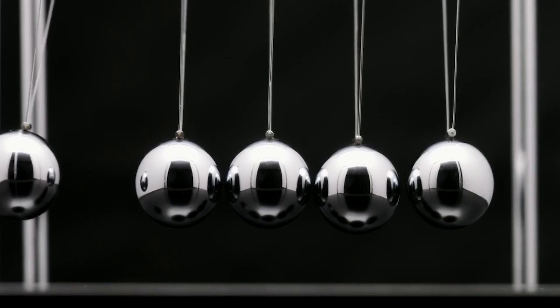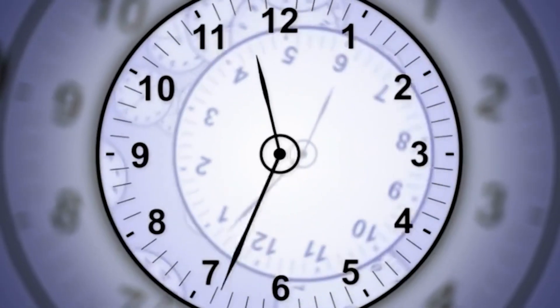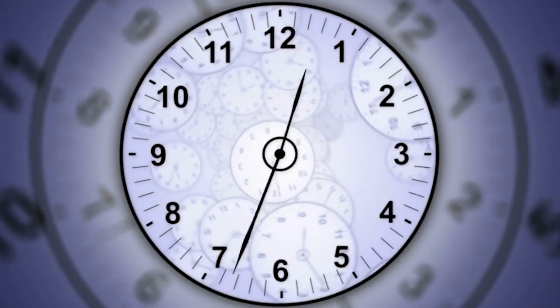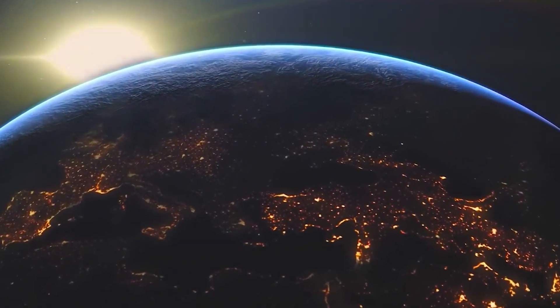This presents an intriguing and terrifying paradox. If the laws of physics don't inherently distinguish between past and future, then why does time appear to move in only one direction in our macroscopic world? Why is it that we can't reverse time?